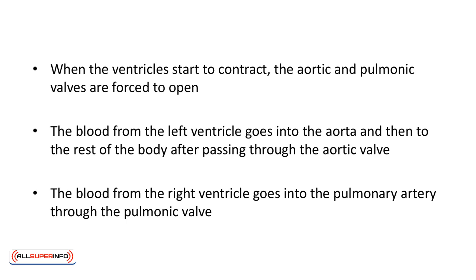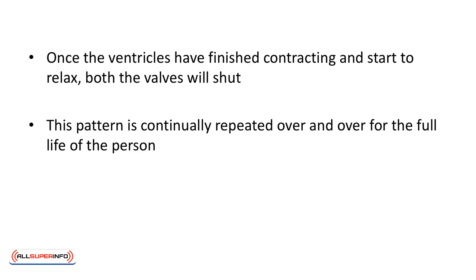The blood from the right ventricle goes into the pulmonary artery through the pulmonic valve. Once the ventricles have finished contracting and start to relax, both valves shut, preventing any blood from flowing back. This pattern is continually repeated for the full life of the person.